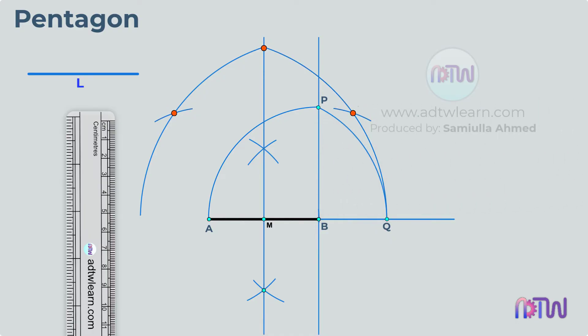Label these points as C, D, and E. These are the five vertices of our pentagon. Join these vertices with lines.